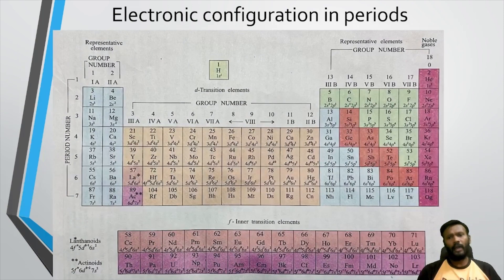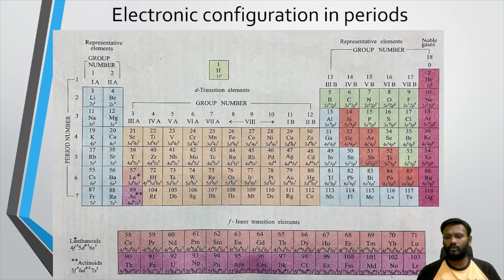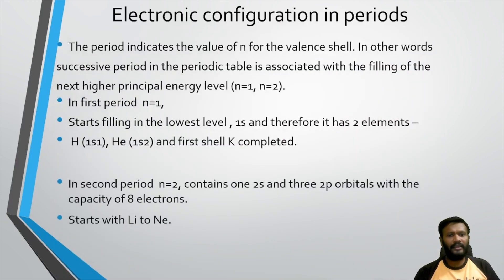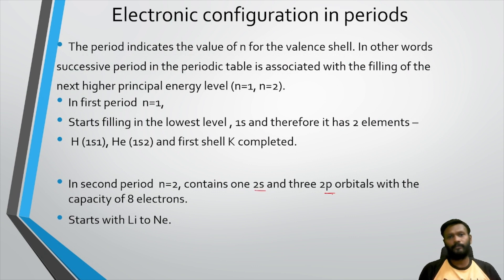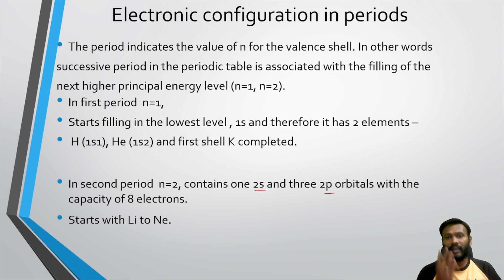The second period has n equal to 2. It contains one 2s orbital and three 2p orbitals — a total of 4 orbitals. Each orbital can fill 2 electrons, giving 8 electrons total across 4 orbitals. So the second period contains 8 elements, starting from lithium and ending with neon.